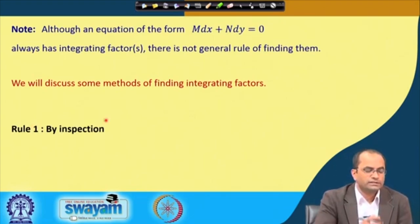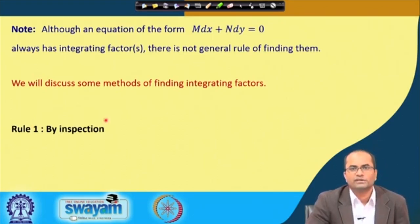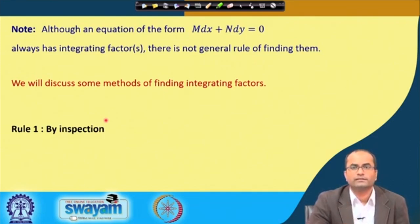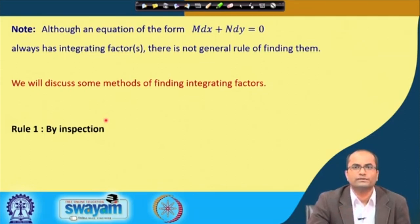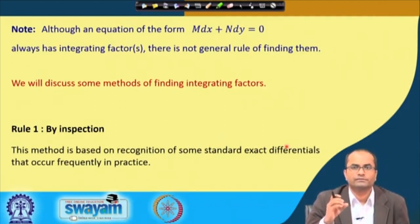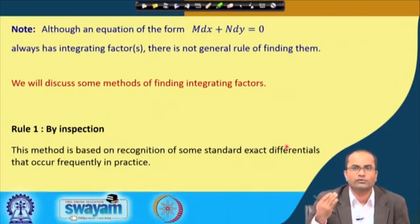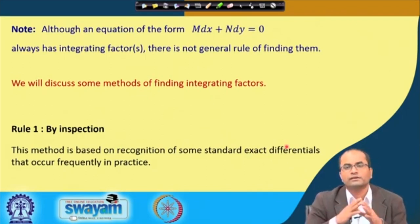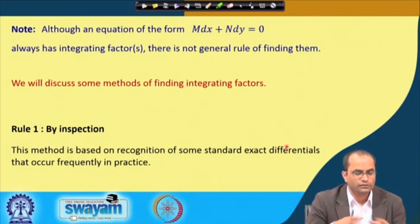Rule number one is finding the integrating factor by inspection. This is the most common approach, but also the most difficult because it is not a systematic approach — it is essentially a guess by looking at the differential equation and recognizing what function to multiply by. This method is based on the recognition of some standard exact differentials.